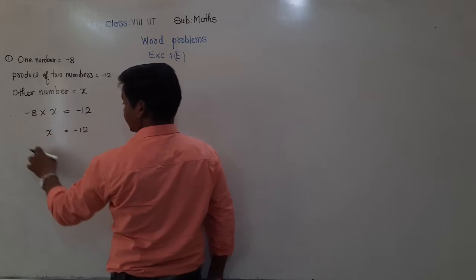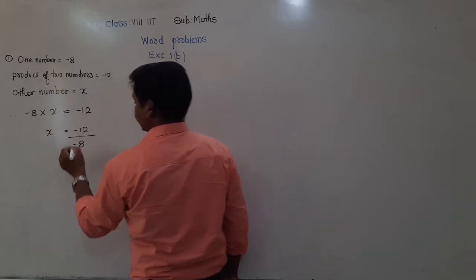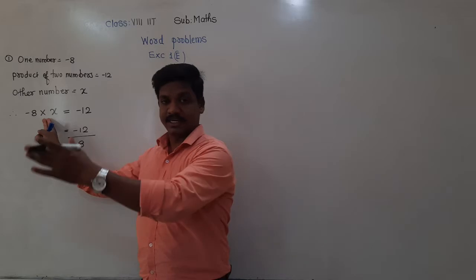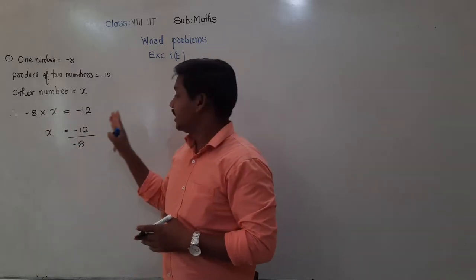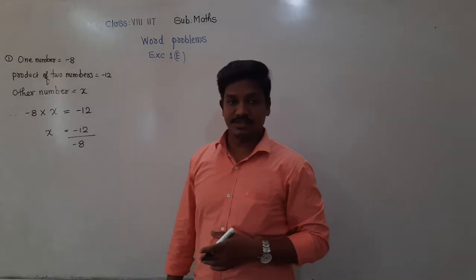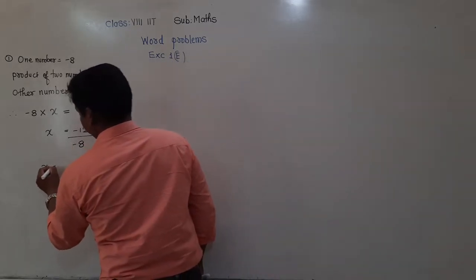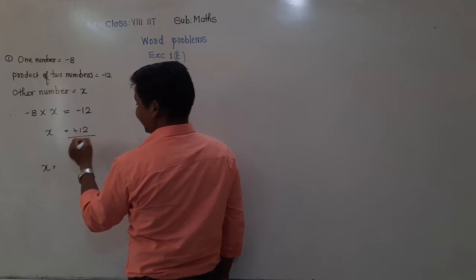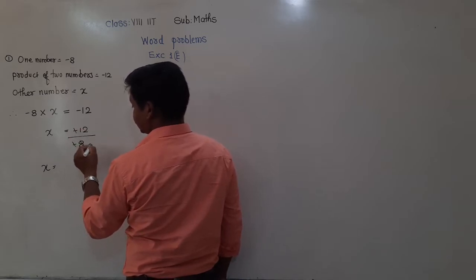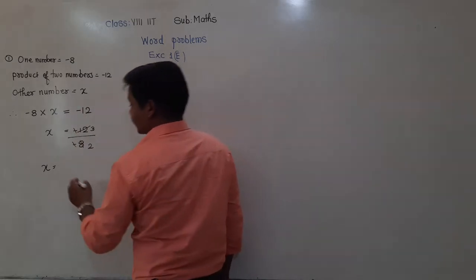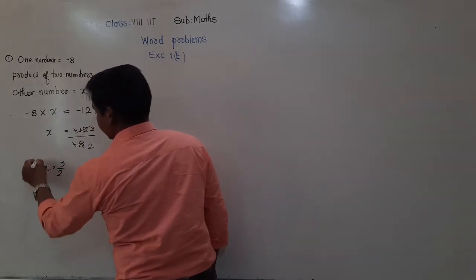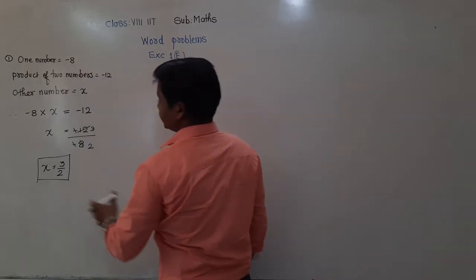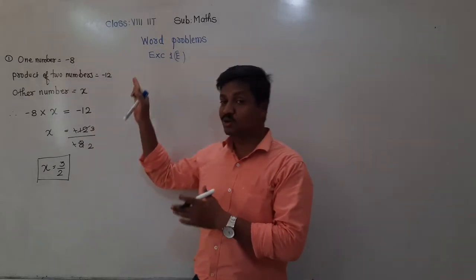On the right side, minus 12 is there. When minus 8, which is multiplied on the left side, changes its side, it becomes divided by the number on the right side. So x is equal to minus 12 divided by minus 8. Now 12 and 8 are both in the table of 4 — 4 threes are 12 and 4 twos are 8 — so the answer is 3 by 2. X is equal to 3 by 2, meaning the other number is 3 by 2. This is the step-by-step solution of this word problem.